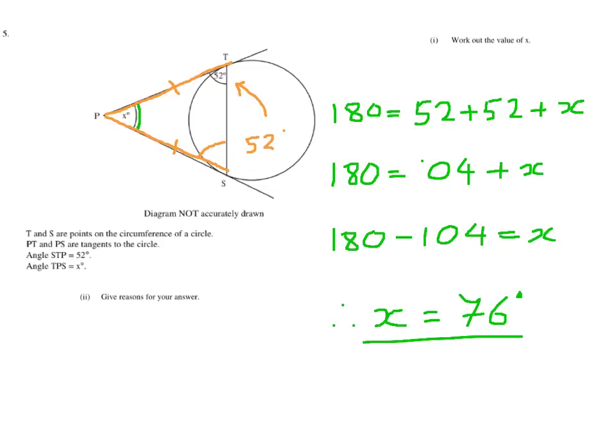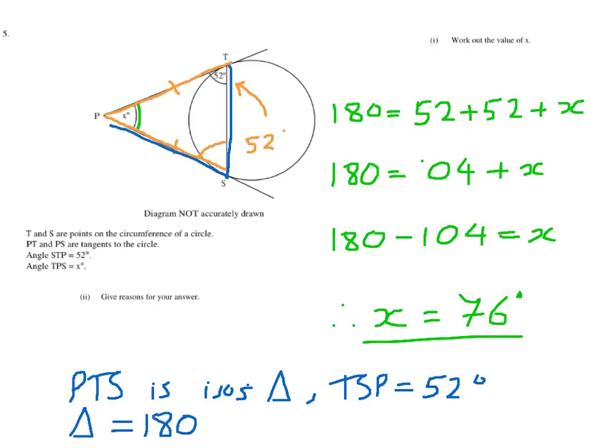I am asked to give reasons for my answer. So I simply need to say something along the lines of PTS is an isosceles triangle. And I could just write isosceles triangle. And I also said that TSP equals, and I said that was 52 degrees. And I should probably say triangle equals 180 degrees. You see, I've literally put the bare basics.